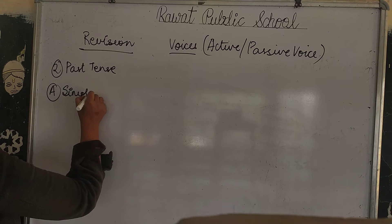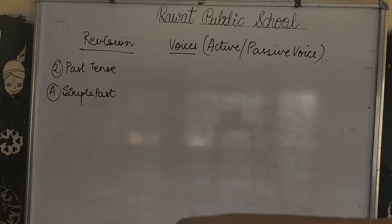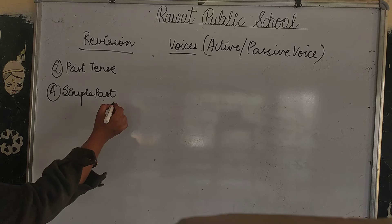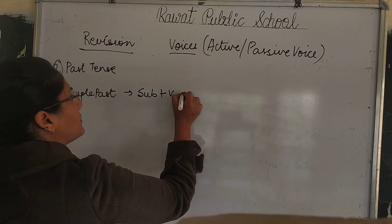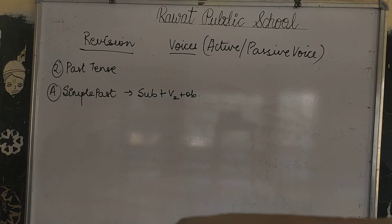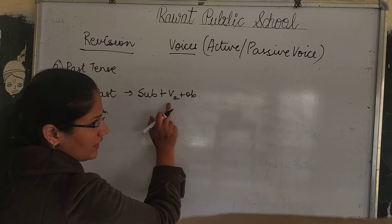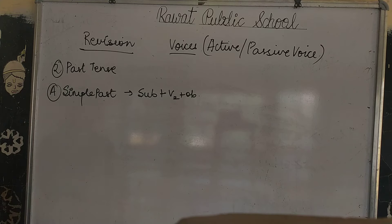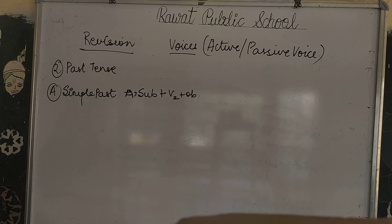First of all, simple past. The general formula for simple past is: Subject plus verb second form plus Object. This will be your active formula for simple past tense.